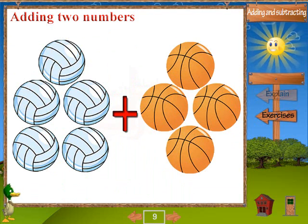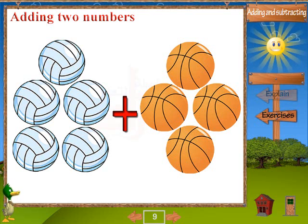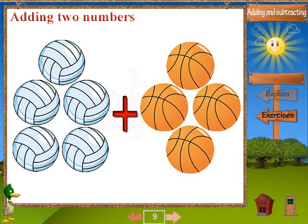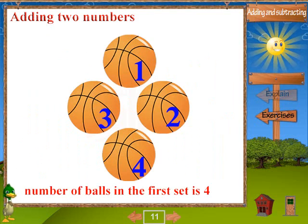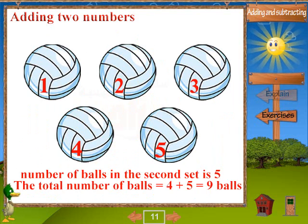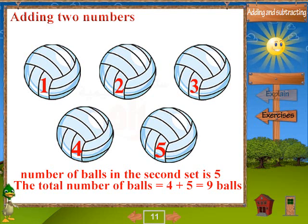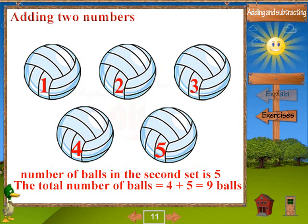Let's see another picture. These are two sets of balls. Let's add them together. Number of balls in the first set is four, and the number of balls in the second set is five. Then the total number of balls equals four plus five equals nine balls. At the end, goodbye.